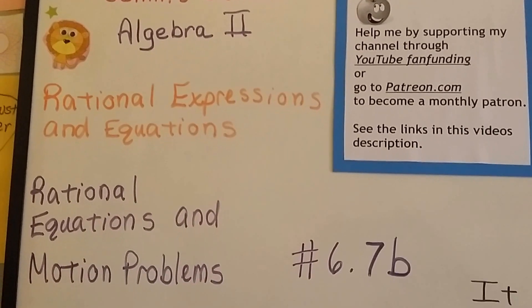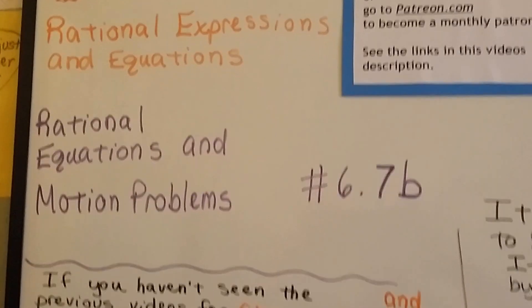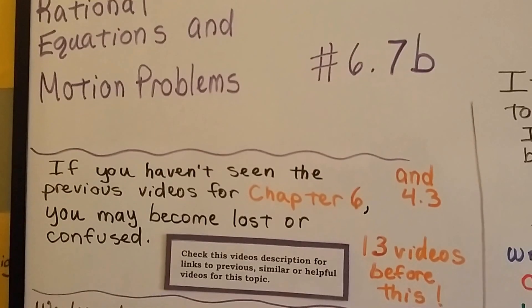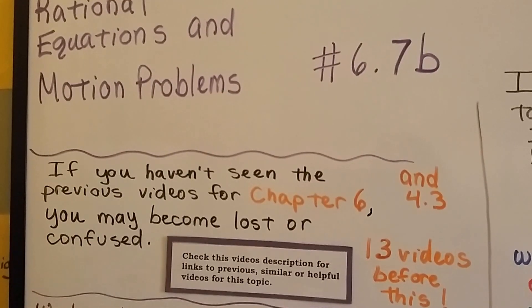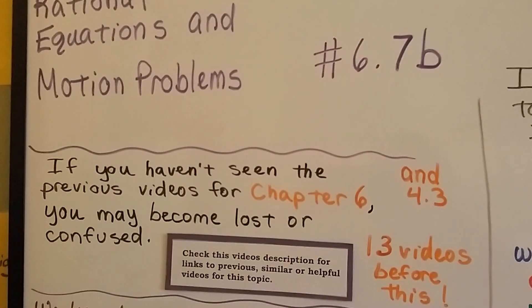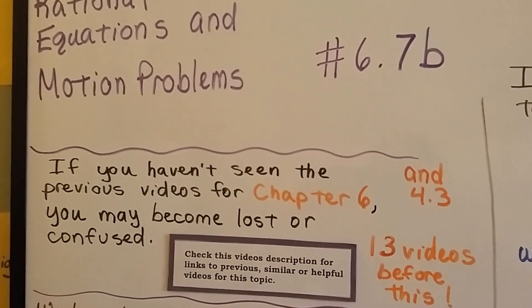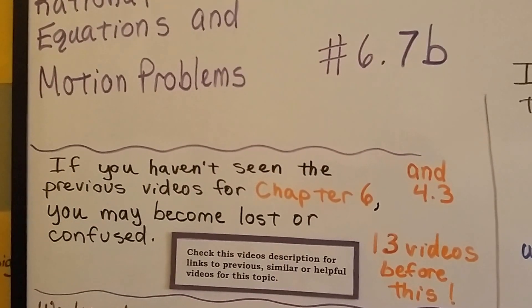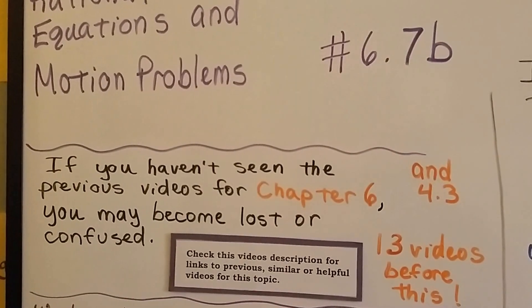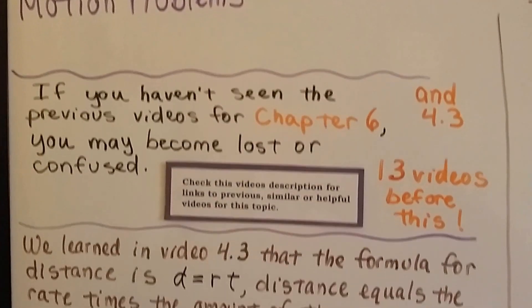Algebra 2, 6.7b, Rational Equations and Motion Problems. Now it'll help you if you saw video 4.3 and if you've been following along, or if you've seen the previous videos for chapter 6, there's 13 of them now. There's links in this video's description so you can watch them quickly. I don't want you to become lost or confused.